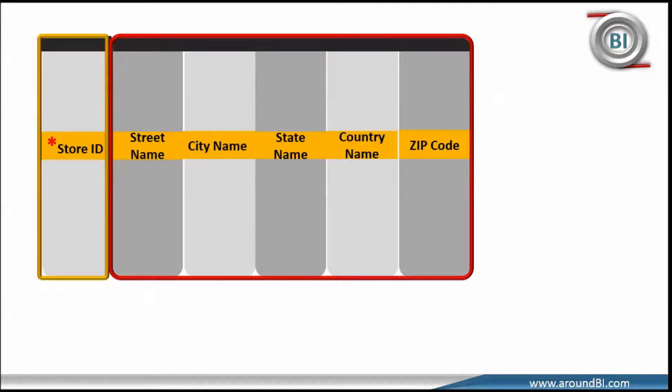These attributes and key field go as columns in dimension table. So in our example of store dimension, all these text-based attributes will go as columns in store dimension table.